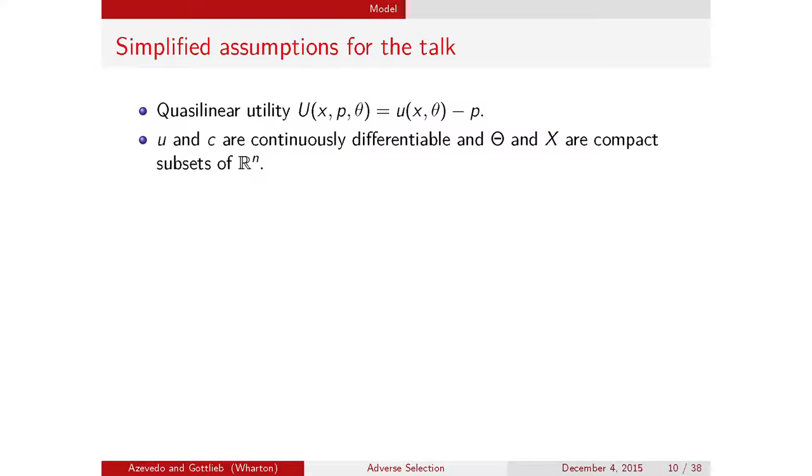Then there's what I call an interesting example, where I'll calibrate the demand side of an empirical model with several dimensions of heterogeneity—much richer types—and try to see what happens in equilibrium. This goes back to the mandate application. In the talk I'll use quasi-linear utility: consumer theta has some willingness to pay U for contract X, and these functions are continuously differentiable.